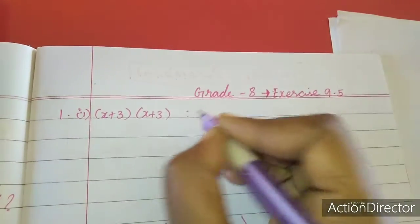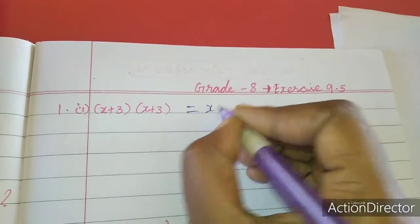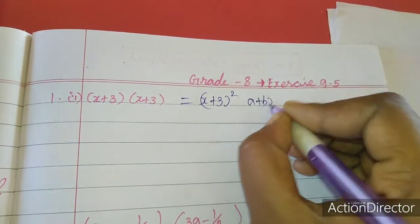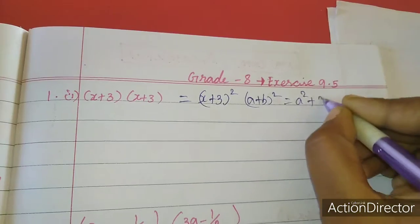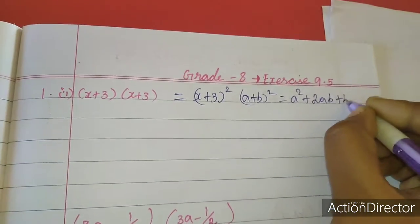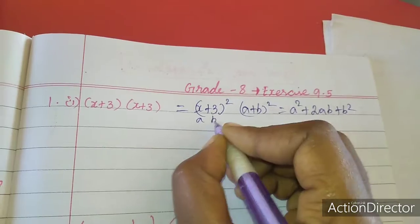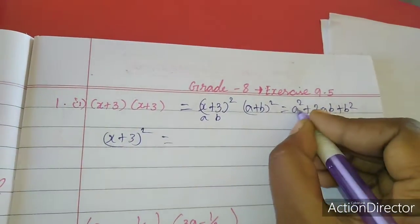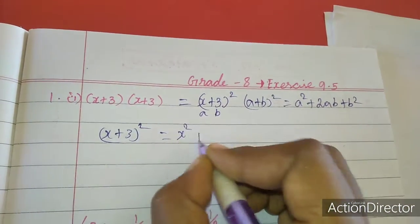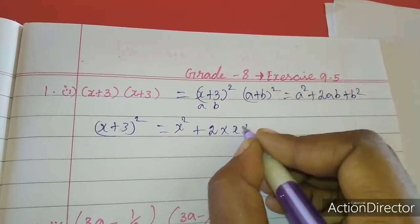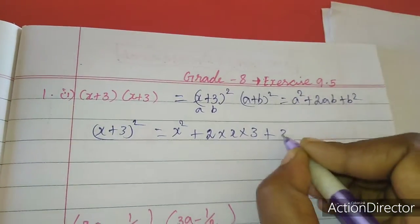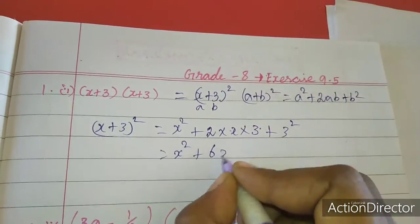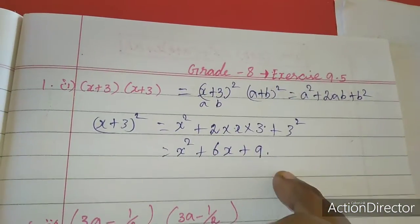This is written as (x + 3)². The identity is (a + b)² = a² + 2ab + b². Here a = x and b = 3. So (x + 3)² = x² + 2(x)(3) + 3² = x² + 6x + 9. This is the answer for the first sum.